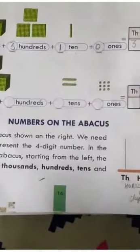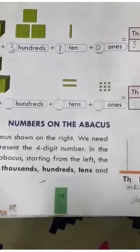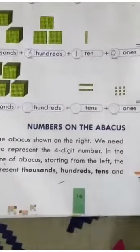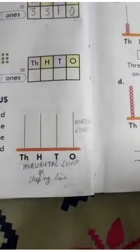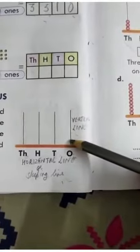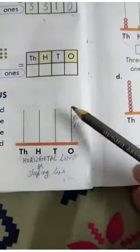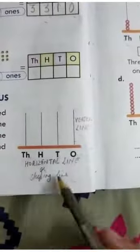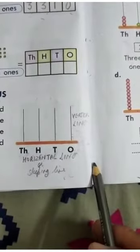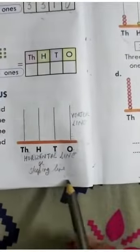Now how to show numbers on the abacus. To draw an abacus you need 4 spikes, or you can say you need 4 vertical lines. What are vertical lines? Standing lines. And you need 1 horizontal line. What is a horizontal line? A sleeping line.